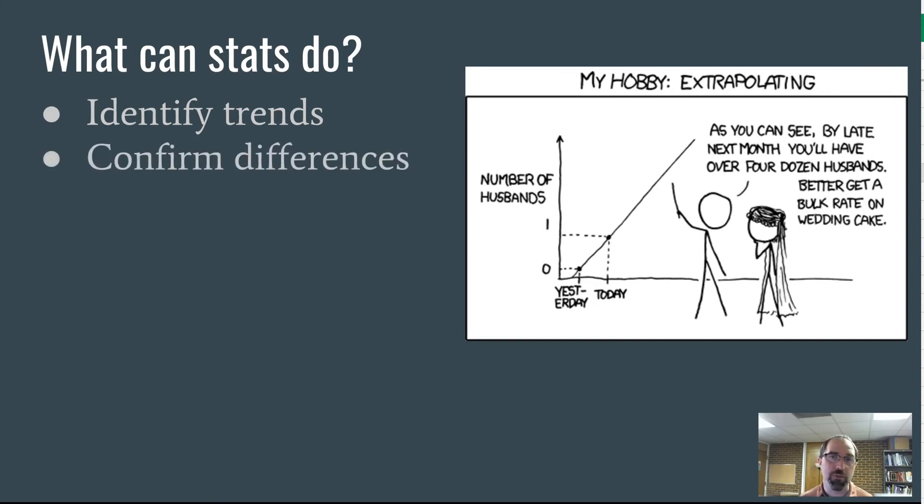It can confirm differences between groups. You can think about things like drug trials, or if we think about is one city different from another city in terms of economic growth. Stats are really good at doing things like that.